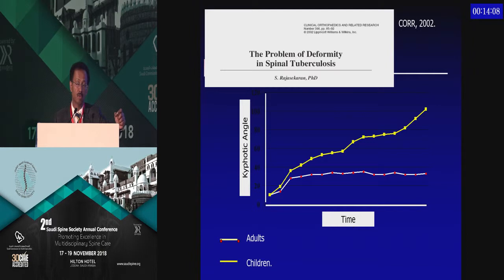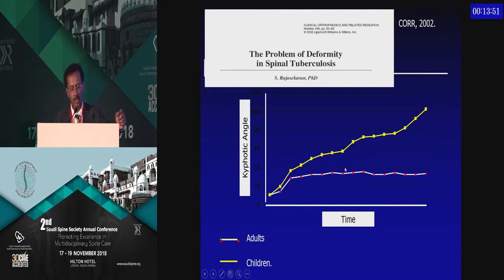We have to understand that most patients with gross deformity are the result of childhood spinal tuberculosis. In adults, there is an increase in deformity, but once healing takes place, there is no further increase over the rest of the period. However, for a child, even though cure of the disease is achieved, there is a continuous increase in deformity in approximately 40% of children through the entire period of growth.